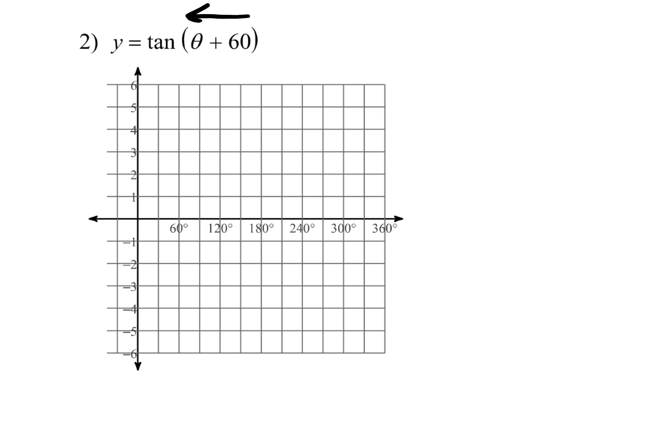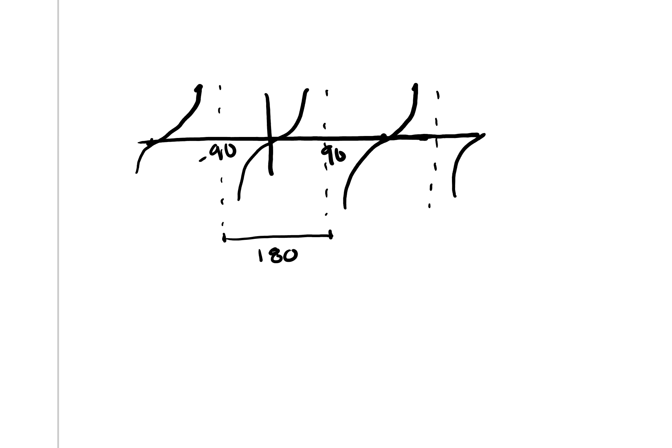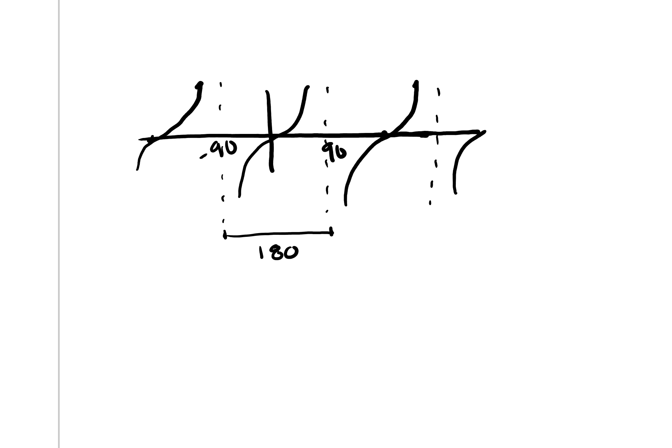Let's look at the parent graph of tangent. The period of tangent is 180 degrees, and we see that it has x-intercepts and asymptotes.